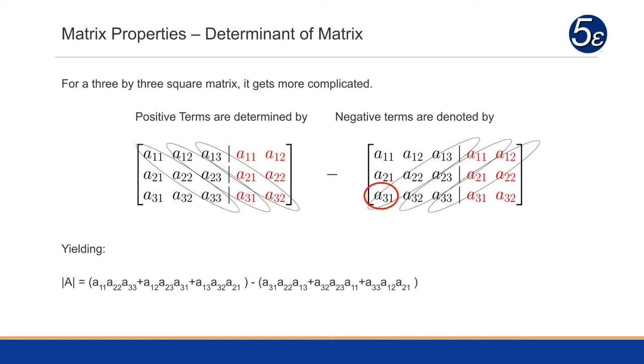And so therefore, we're going to subtract a₃₁ times a₂₂ times a₁₃, then a₃₂ times a₂₃ times a₁₁, and a₃₃ times a₁₂ times a₂₁. That will give us the determinant of A.